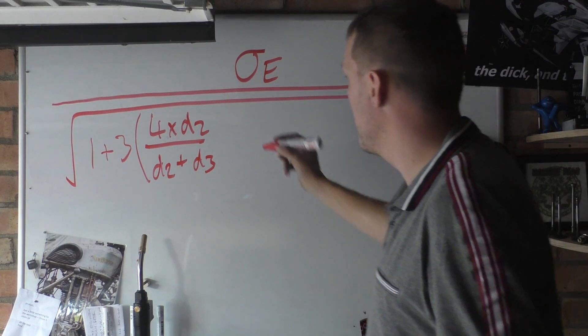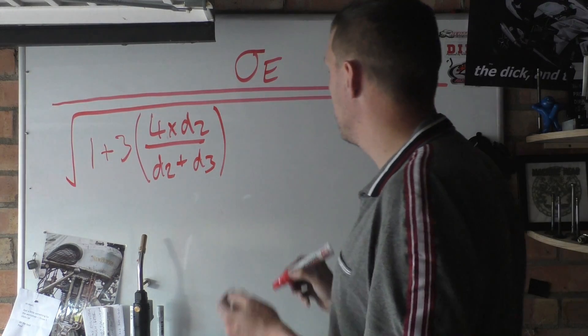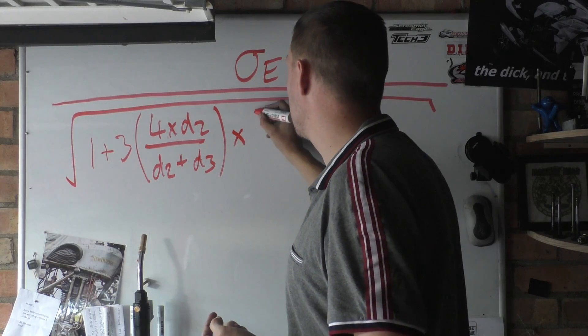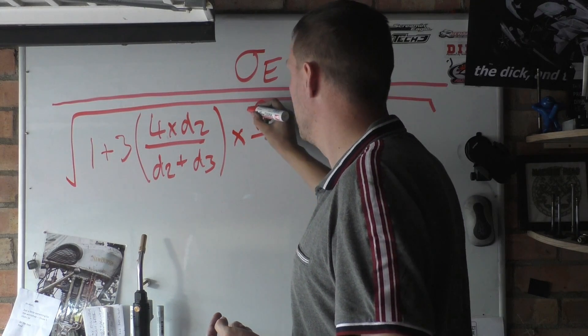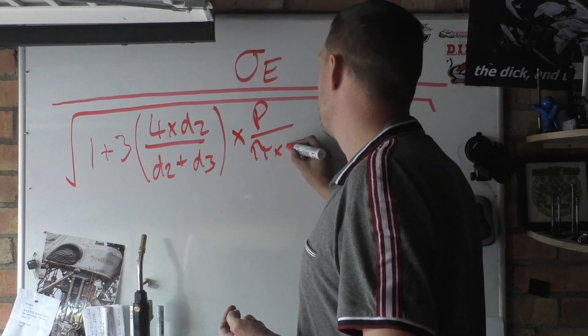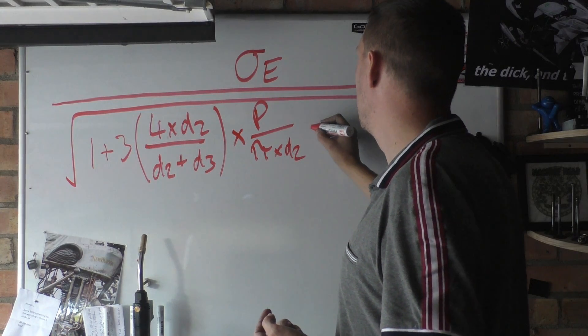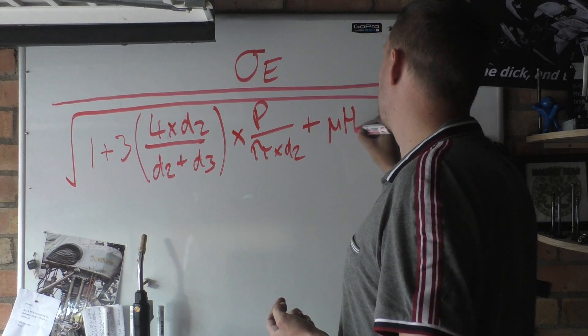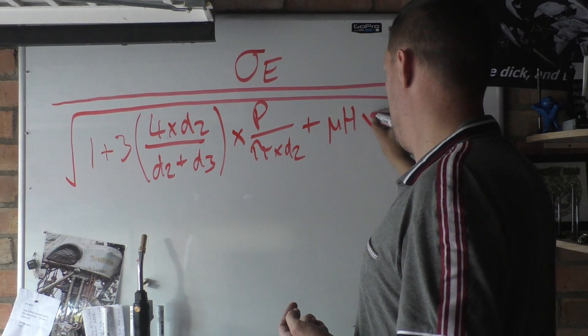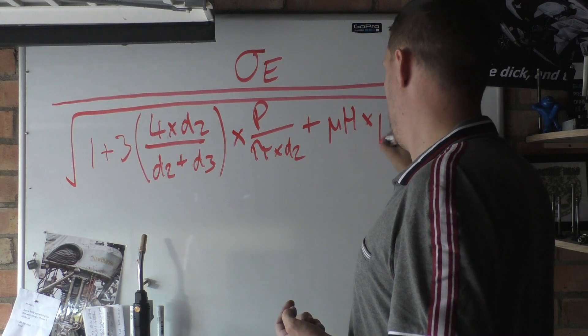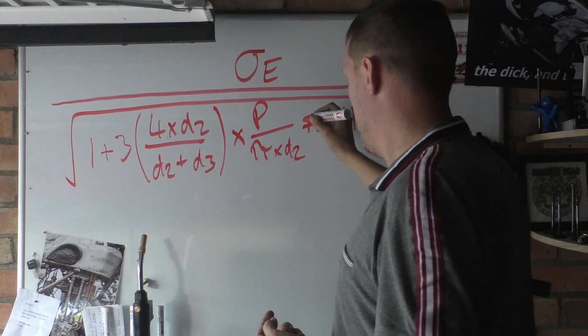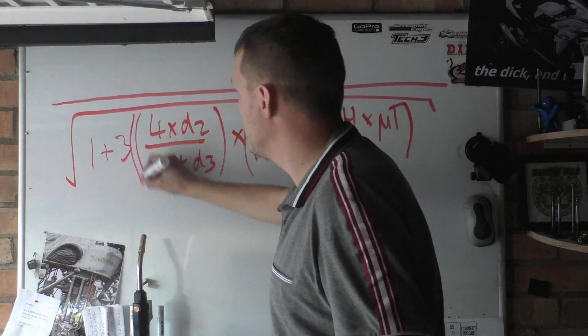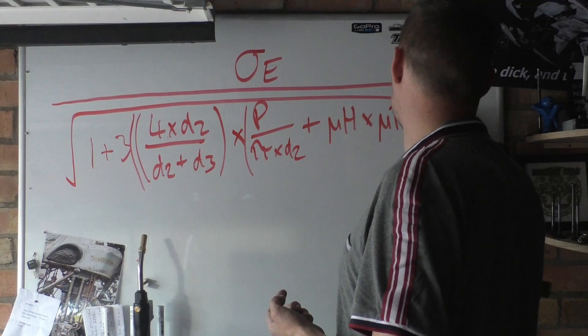Is that right? Yeah, and that's times, and then we get to our helix, that's p over pi d2. I think that's plus our head times our T and this is bracketed, that is bracketed, and that's all squared.